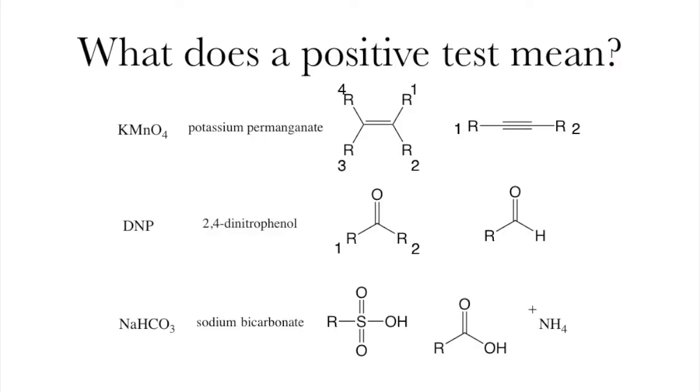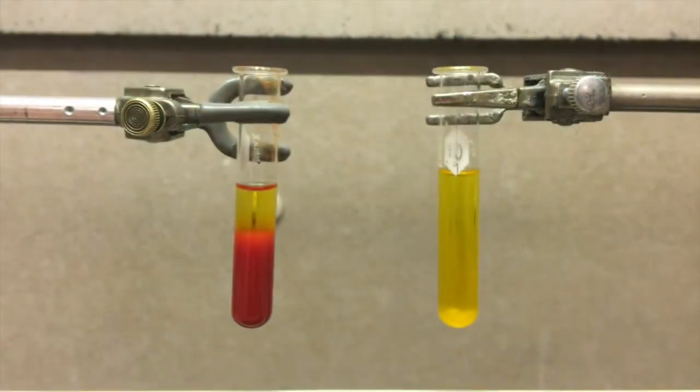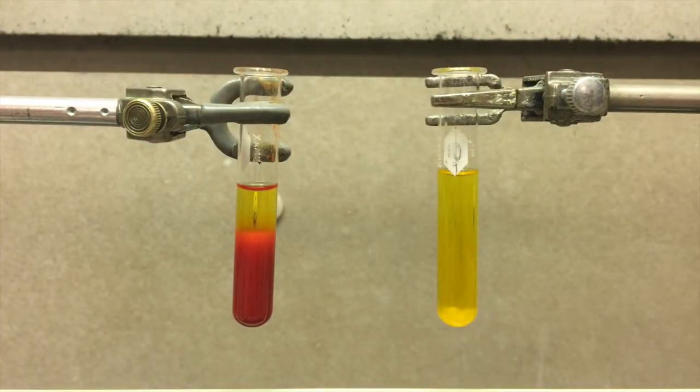DNP, which can show you aldehydes and ketones. The orange precipitate positive test result is on the left, and the negative lack of precipitate is on the right.